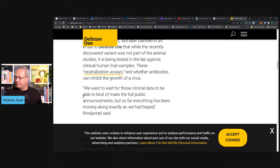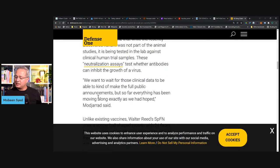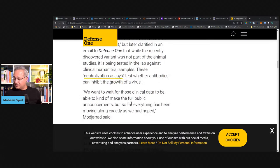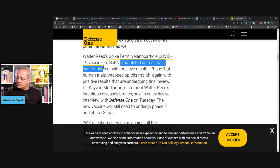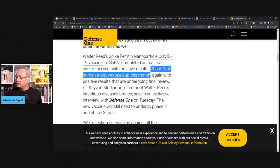And then putting the spike, we want to wait for those clinical data to be able to kind of make the full public announcement. But so far everything has been moving along exactly as we had hoped, Modjarrad said. And I think they have said that they've done human phase one trials already. They said completed animal trials earlier this year with positive results. Phase one of human trials wrapped up this month, again with positive results that are under review.